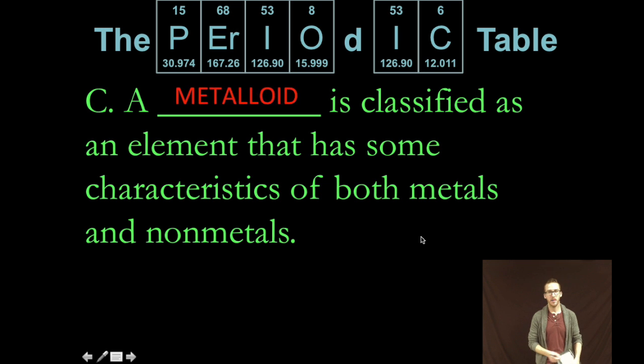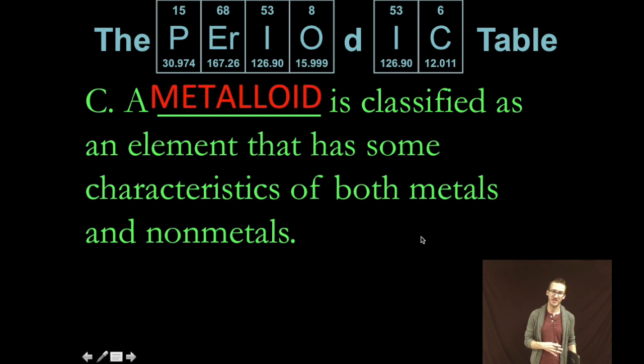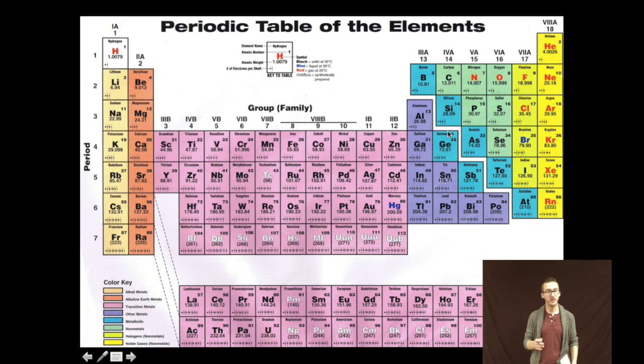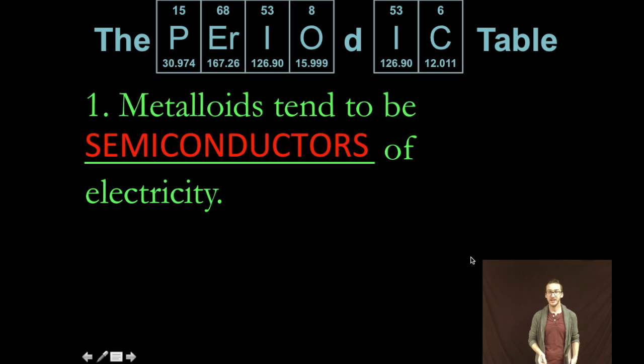Lastly, metalloids are those elements that have some characteristics of both metals and your non-metals. They are highlighted here in blue and notice they fall in between and separate the metals from your non-metals. They make a nice staircase shape. They tend to be semiconductors of electricity and heat so not as good as your metals but definitely better than your non-metals.